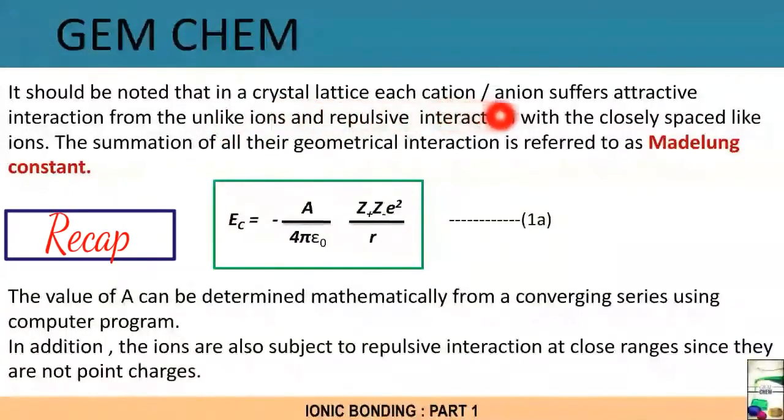In a crystal lattice, each cation and anion suffers attractive interactions from the unlike ions. If we see for cation, and anions are present, there is an attraction, but also a repulsive interaction with the closely spaced like ions. If cations are placed and another cation is placed, then there is a repulsion. The summation of all their geometrical interaction is referred to as Madelung constant.